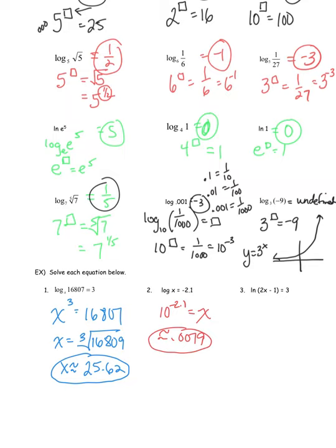For the last example on this page: ln of (2x minus 1) equals 3. It's like the previous one but base e instead of base 10, so e to the third equals 2x minus 1. Calculating e to the third gives about 20.0855. That equals 2x minus 1, so I add 1 to both sides and divide both sides by 2, getting an answer of approximately 10.54 for x.